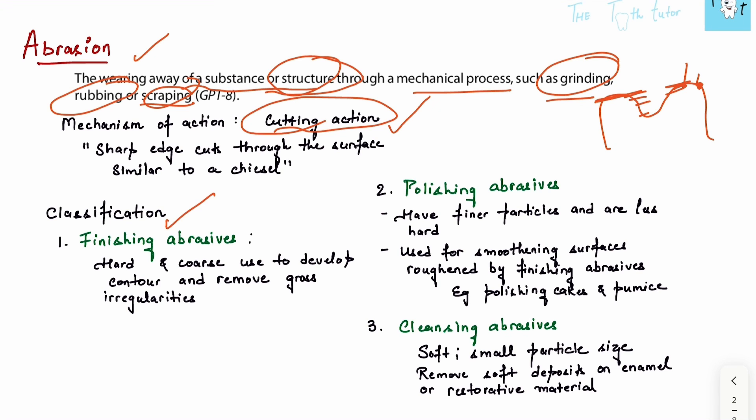Now, classifications. What type of abrasives do we have? We have finishing abrasives, polishing abrasives, and cleansing abrasives. Finishing abrasives are hard and coarse, meaning larger in grain size. They're used to develop contour and remove gross irregularities - mainly used to remove bigger irregularities.